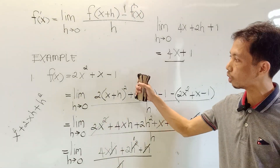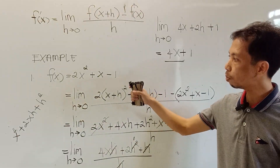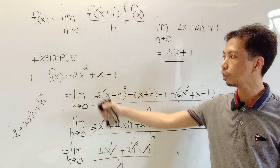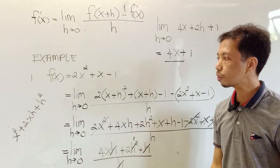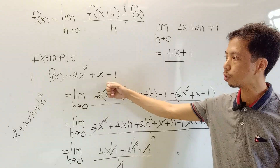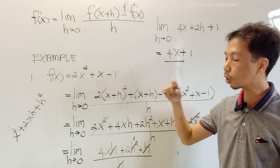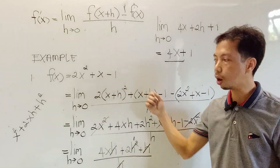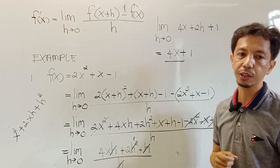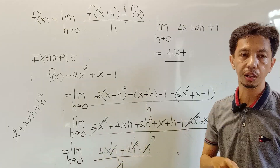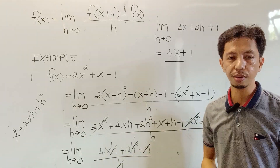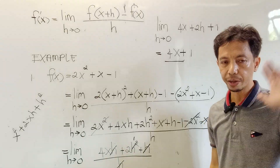In my next video, I'm going to cover what happens if there are only constants — no variables. The first video had one variable, the second had two variables, and this third video will cover what if there are no variables at all. I'll send it on our GC. Thank you for watching again. Bye-bye.